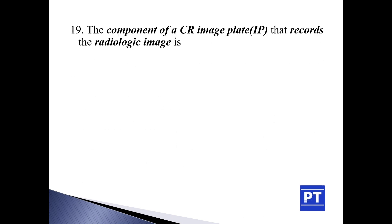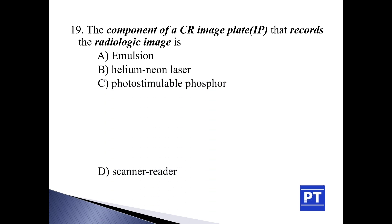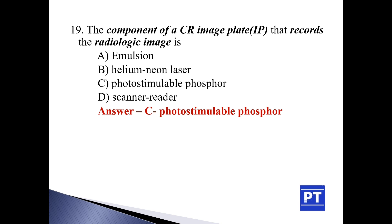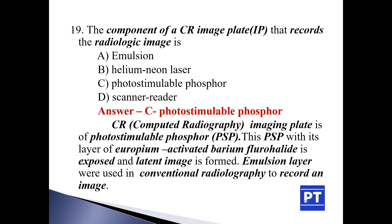Question number 19: The component of a CR (computed radiography) image plate that records the radiographic image is: option A emulsion, option B helium-neon laser, option C photostimulable phosphor, and option D scanner reader. The answer is C, photostimulable phosphor. The CR computed radiography imaging plate is made of photostimulable phosphor. This photostimulable phosphor with its layer of europium-activated barium fluorohalide is exposed and a latent image is formed. Emulsion layer was used in conventional radiography to record an image.